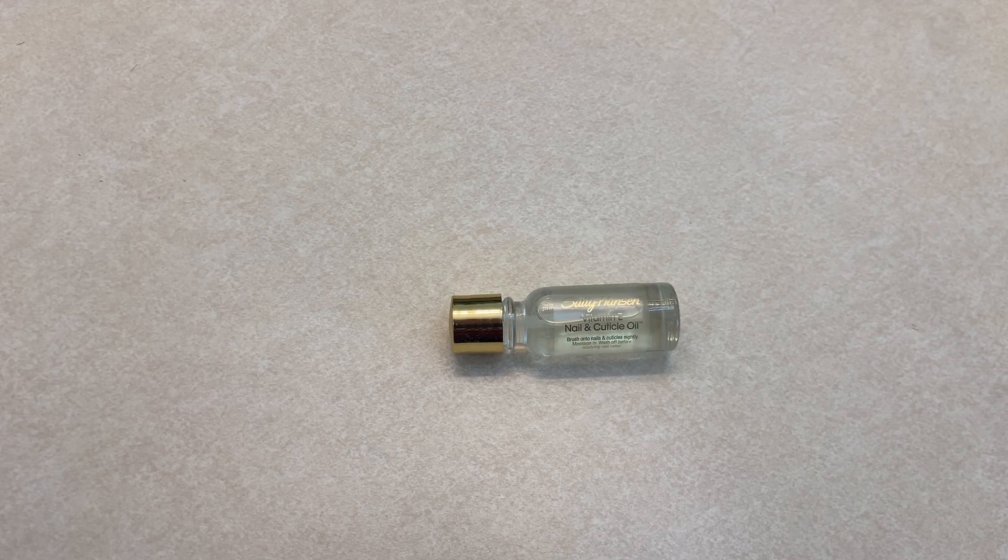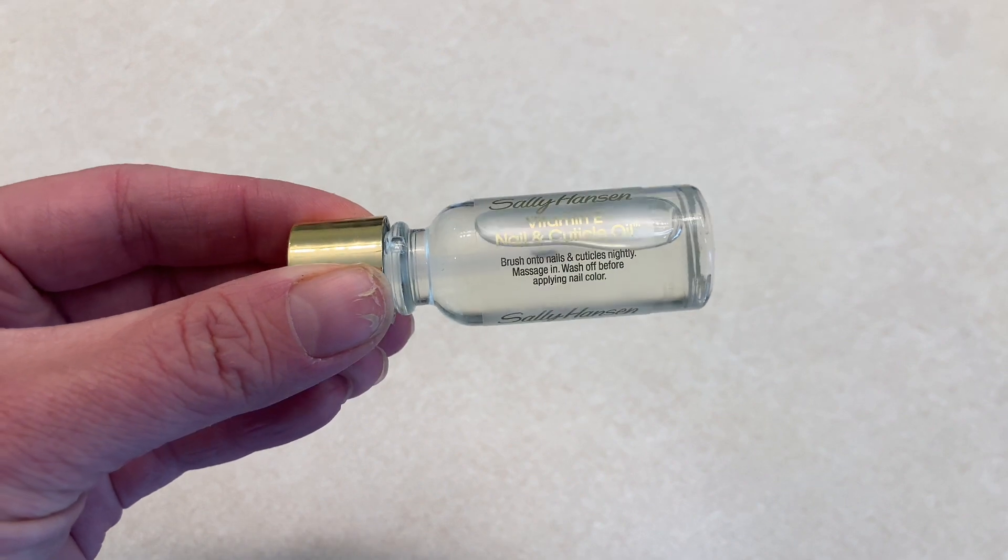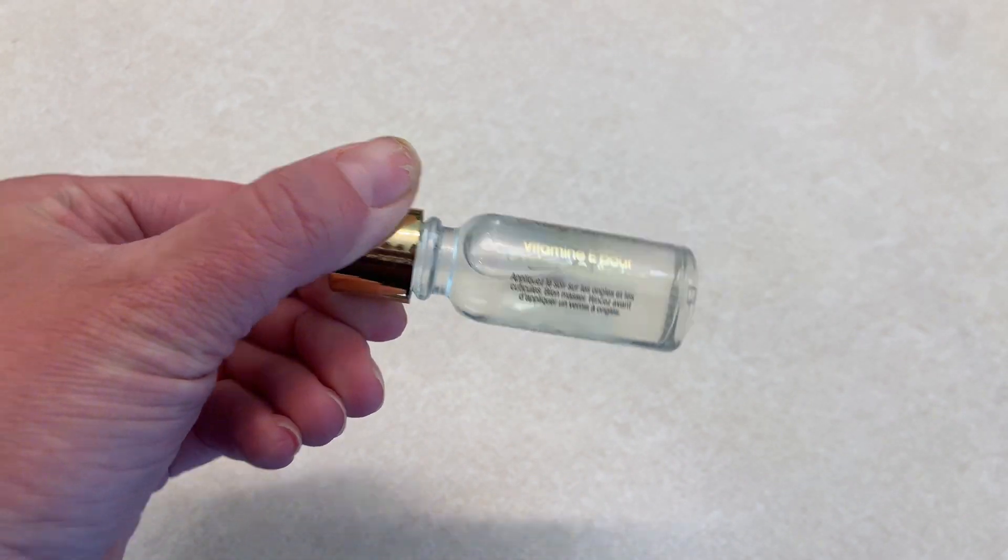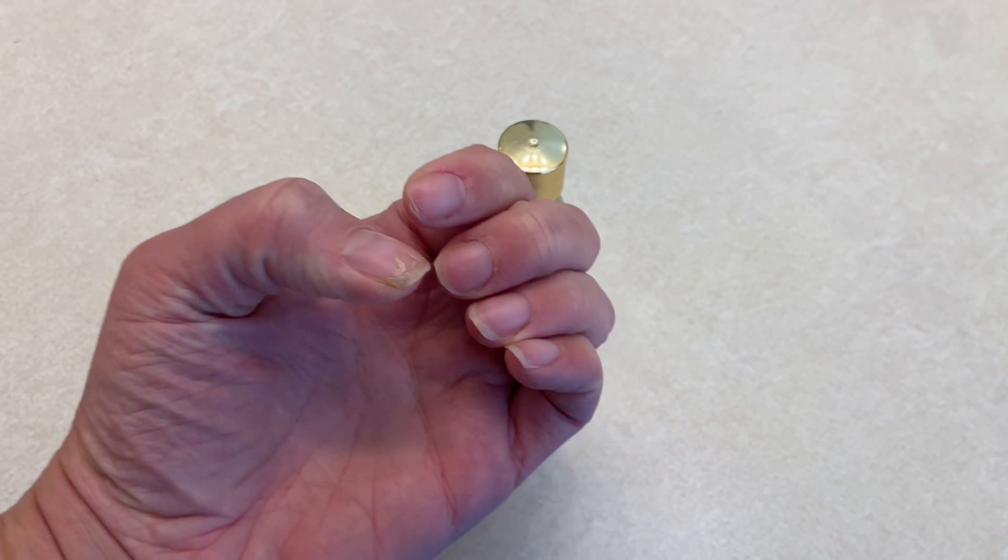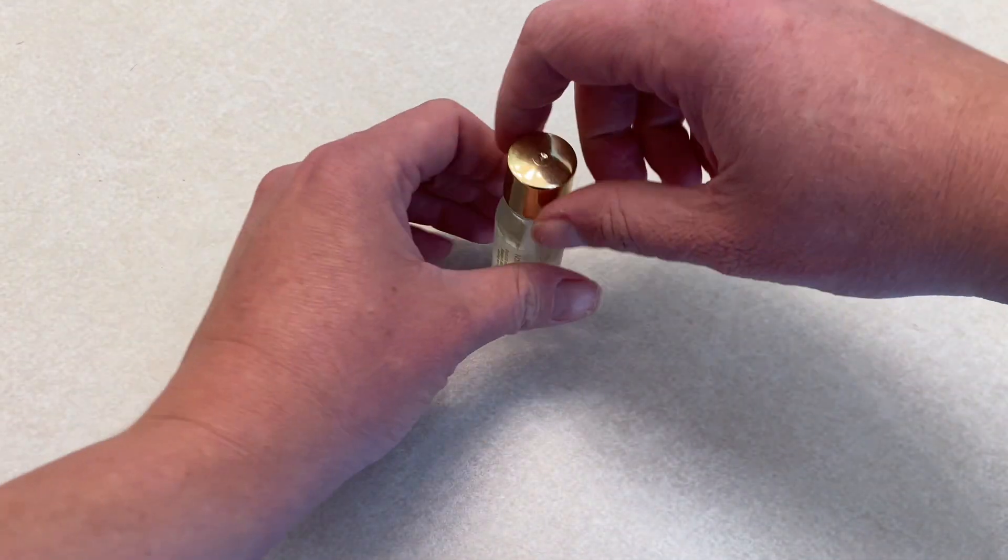I love the Sally Hansen Vitamin E Nail and Cuticle Oil. I got a gel manicure recently and it just destroyed my nails and my cuticles. They're so dry, cracking and peeling, and this stuff really helps with moisturizing the cuticles and the nails.